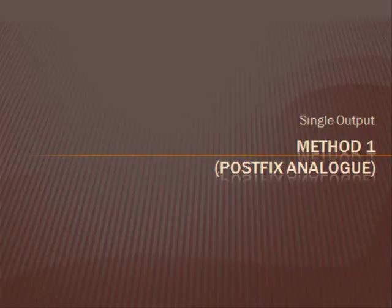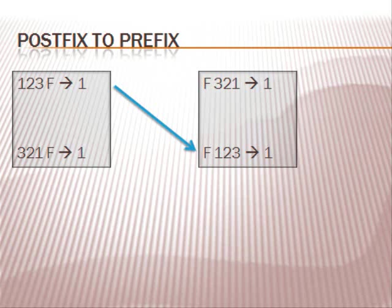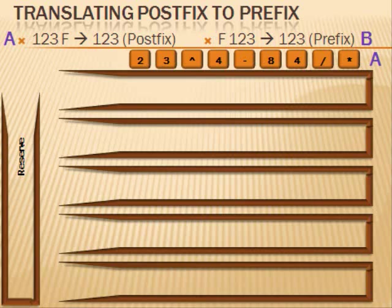This section will show a method to convert postfix to prefix, but only for equations containing functions that have one output. This method may remind you of solving a postfix equation. If we are only using functions that have one output, we can translate from postfix to prefix using the following procedure. The example equation is: 2, 3, exponent, 4, subtract, 8, 4, divide, multiply.